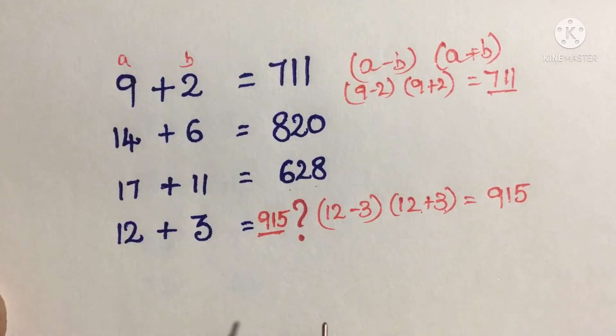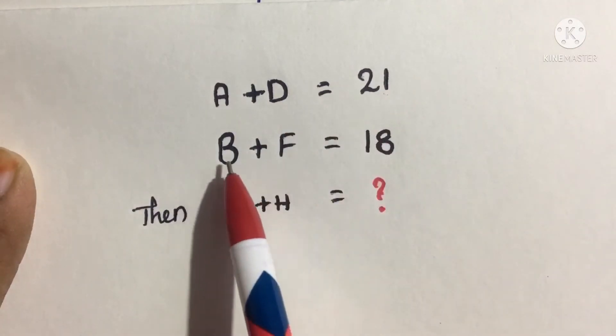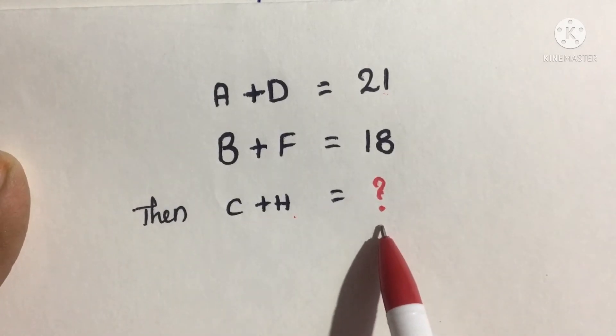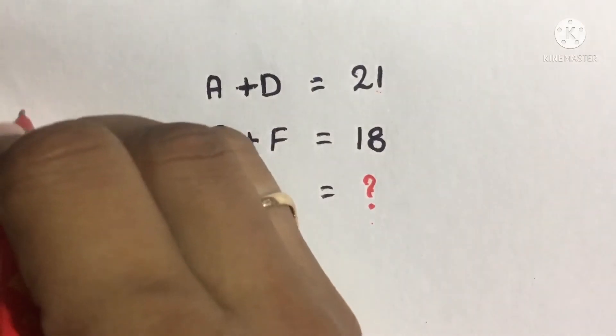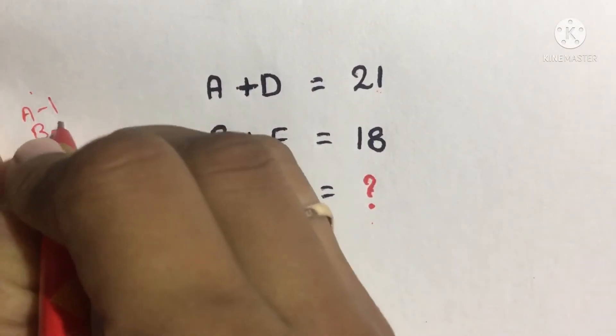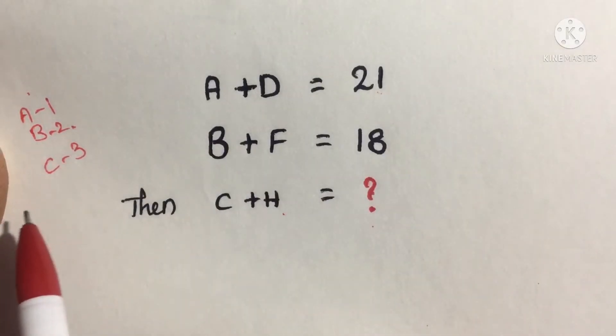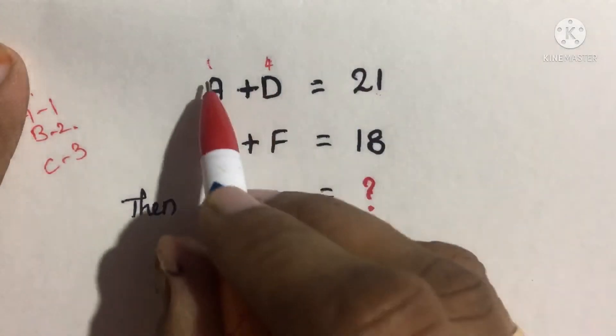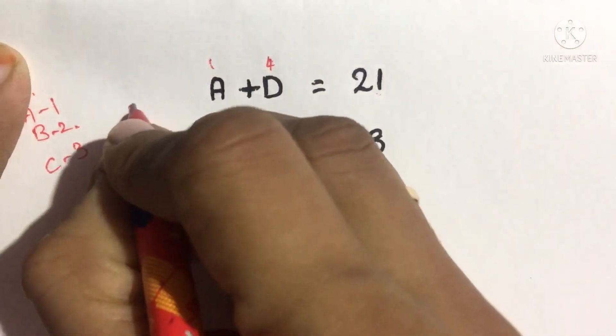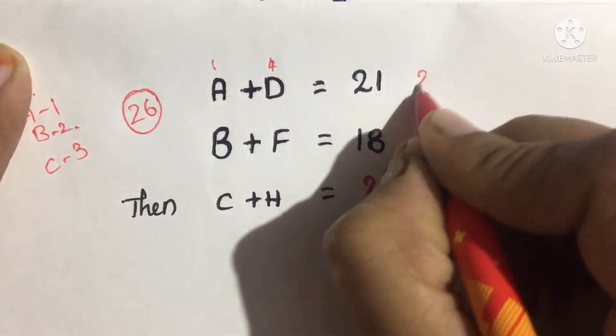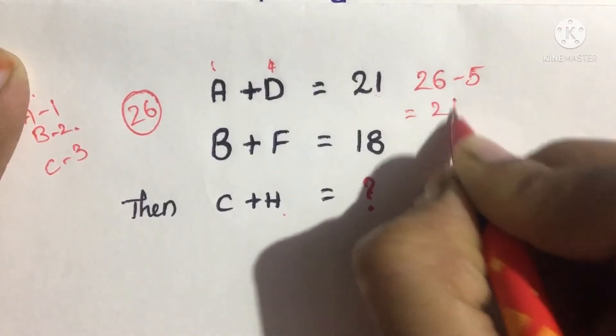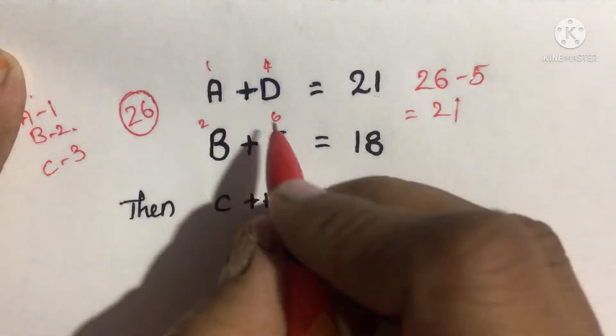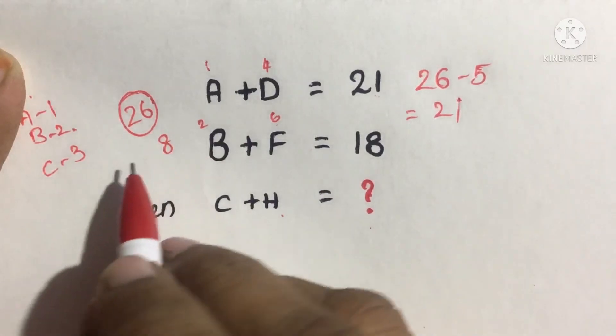Next puzzle: A plus D equals 21, B plus F equals 18, then C plus H equals how much? Here we need to understand that A is 1, B is 2, C is 3 - alphabets have corresponding numbers. So A is 1, D is 4, making it 5 total. 26 minus 5 equals 21.